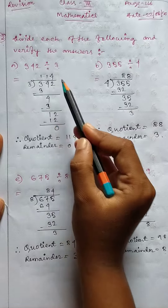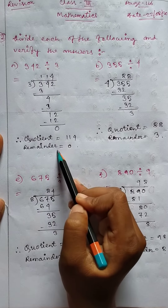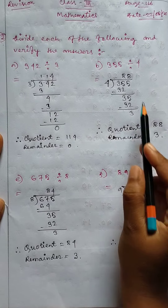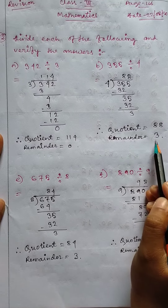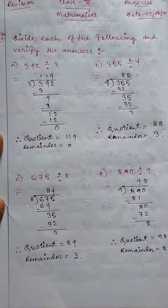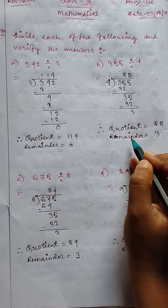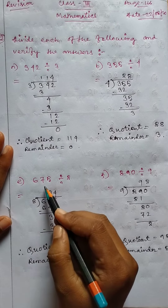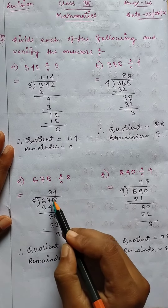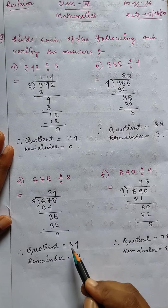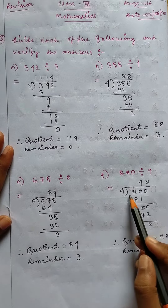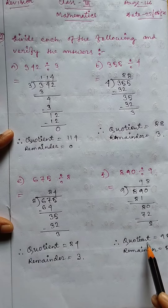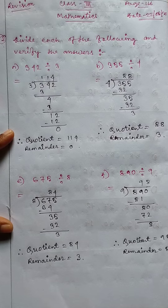Then 355 divide by 4 equals 88 — quotient 88, remainder 3. Then (e) 675 divide by 8 equals 84 — quotient 84, remainder 3. Then 890 divide by 9 equals 98 — quotient 98, remainder 8.